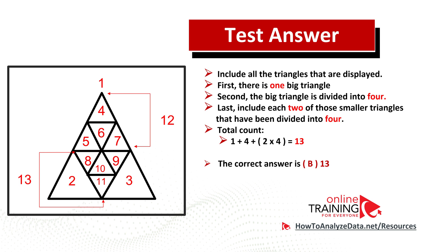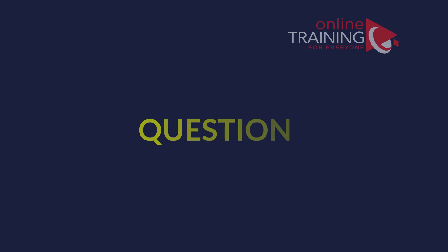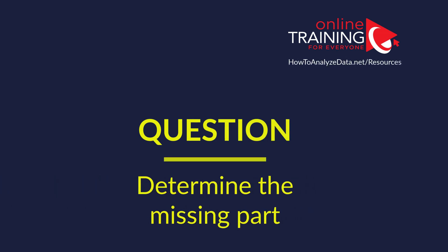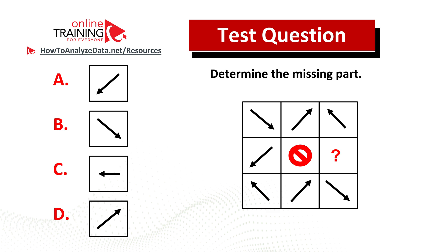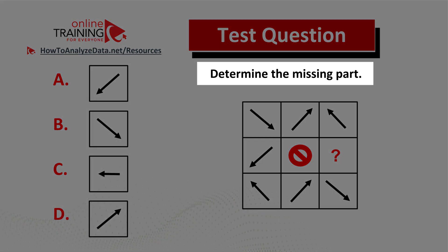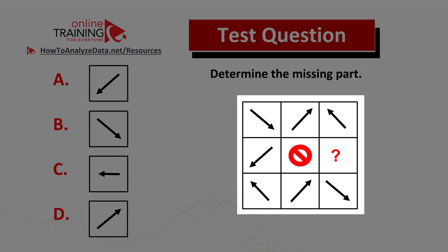Hopefully you nailed this question and now know how to answer similar questions on the test. Some of you might find this question tricky, but regardless of whether you can solve it or not on your own, you will be excited to learn the solution to this real-life assessment test question. Here is the question: determine the missing part. You are presented with a 3 by 3 square which has arrows pointing in different directions. In the middle of the square, you have the X sign, and one of the squares is missing the arrow.